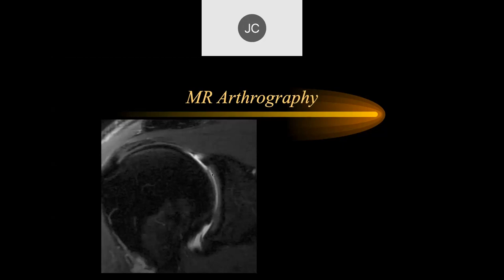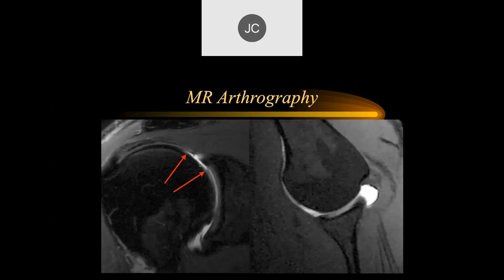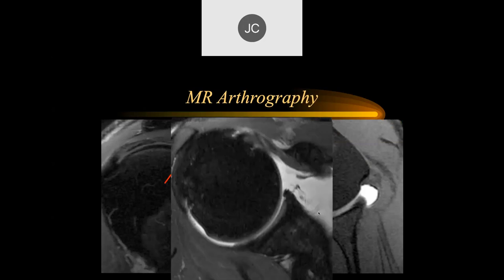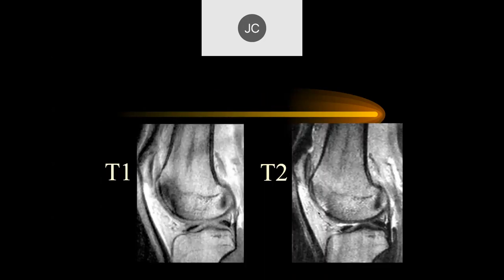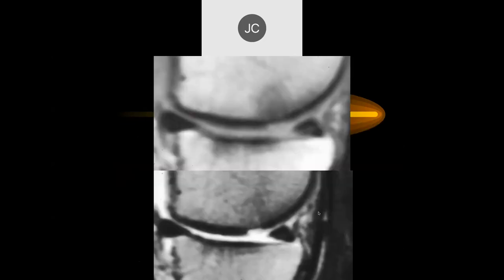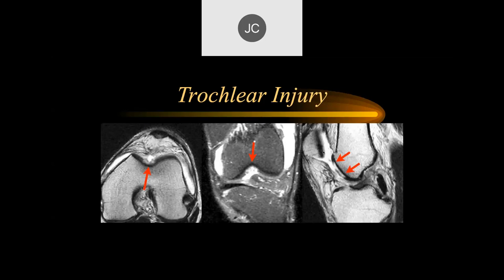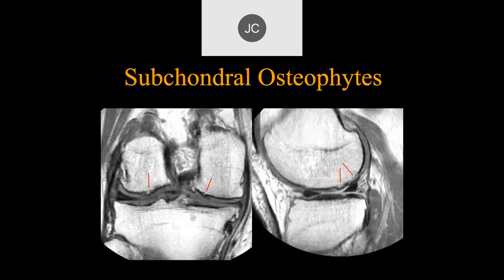In the shoulder, cartilage defects can be very subtle. Here you can see the articular cartilage terminating — this was a full thickness cartilage defect in the humeral head. On MR arthrogram, the cartilage is thinner there. These are typical chronic changes from injury, including sclerosis of the underlying bone. Subchondral osteophytes develop over time as the bone tries to grow out and heal the defect.